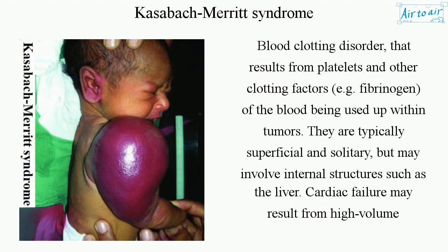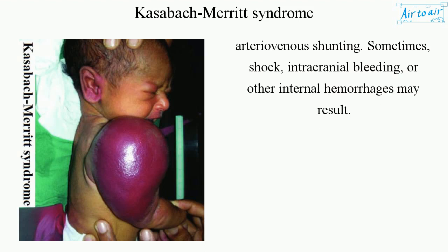They are typically superficial and solitary, but may involve internal structures such as the liver. Cardiac failure may result from high-volume arteriovenous shunting. Sometimes shock, intracranial bleeding, or other internal hemorrhages may result.